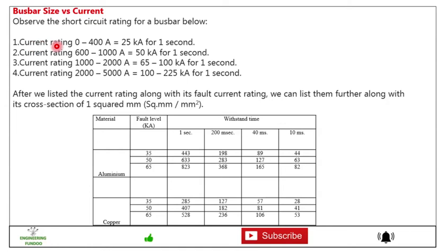Friends, then busbar sizes versus current. Observe the short circuit current rating for the busbar. So one is current rating 0 to 400 amp is equal to 25 kilo ampere for one second.